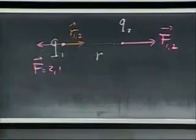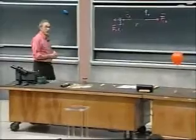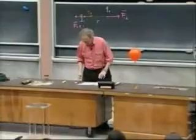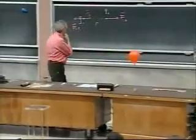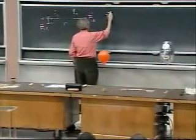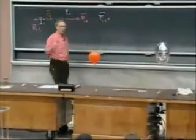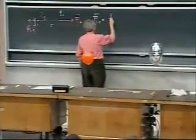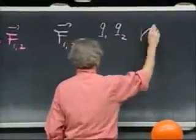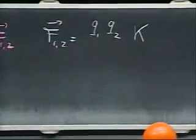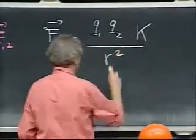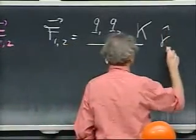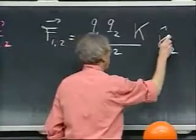Coulomb, the French physicist, who did a lot of research on this in the 18th century actually, found the following relationship, that the force is proportional to the product of the two charges. So it's Q one times Q two times a constant, which nowadays we call Coulomb's constant, K, divided by the distance between these charges squared.